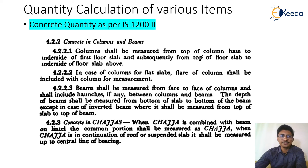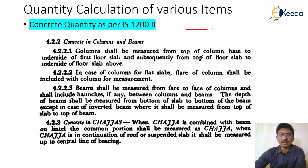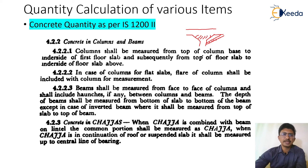In the case of columns for flat slabs, the flare of the column shall be included with the column measurement. In flat slabs there are no beams, so additional support is provided by the column itself through flares. Any concreting within these flares is included in the measurement of the column.